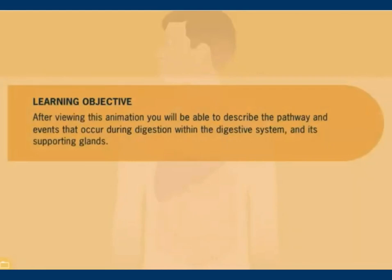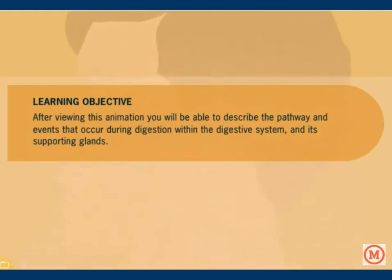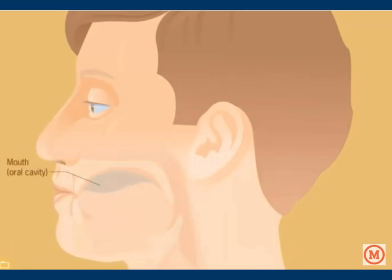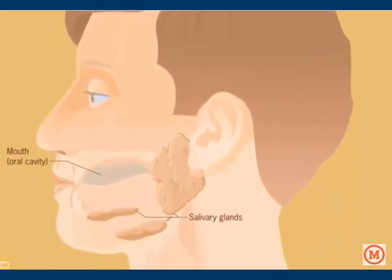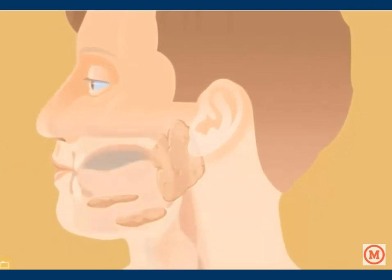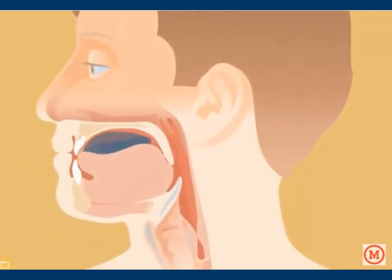After viewing this animation, you will be able to describe the pathway and events that occur during digestion within the digestive system and its supporting glands. Digestion starts in the mouth, also known as the oral cavity, where mastication occurs — the process of chewing and mechanically breaking down the food bolus. Chemical digestion starts when the salivary glands release saliva into the oral cavity. Saliva is rich in amylase, an enzyme that breaks down carbohydrates. After the bolus has been broken down adequately, swallowing begins.